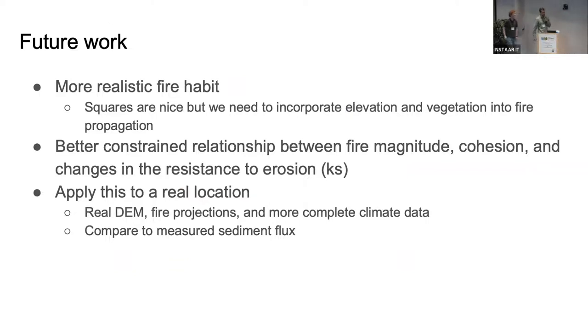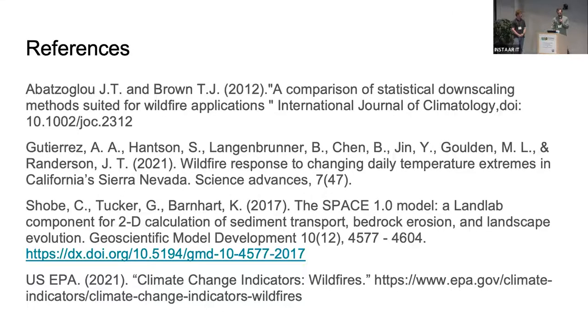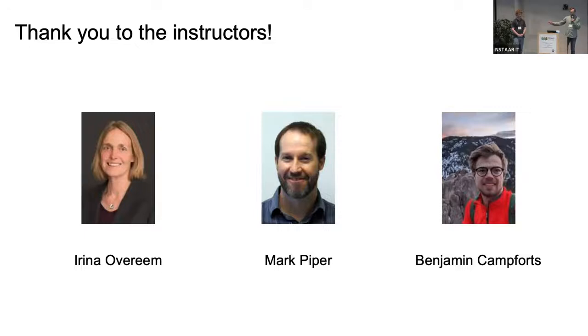Clearly this was a simplified model. For our future work, we really do need more realistic fire habit. As someone asked earlier, squares are nice, but incorporating elevation, vegetation, wind direction, all those things we think would work quite nicely. We also need to better constrain the relationship between our fire magnitude, cohesion, and changes in our Ks or erodibility value. It was just an on-off switch, but it would be nice to trend that with our fire growth and scale it properly. We also want to apply this to a real location. We need a real DEM, real fire projections, and more complex climate data. We also want to compare it to actual measured sediment flux going forward. These are references. We also wanted to thank our instructors for this week. This was really fun, so maybe give them a round of applause.